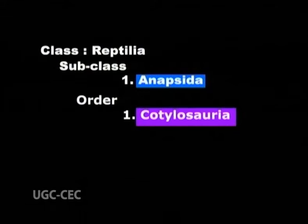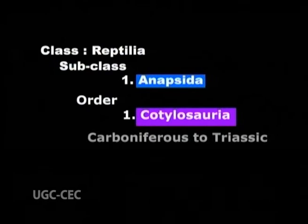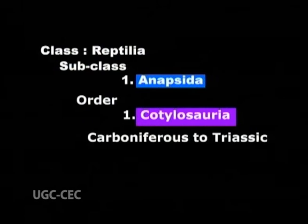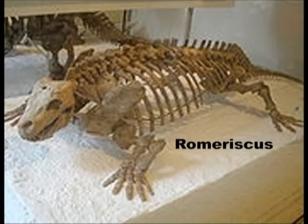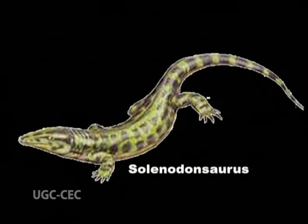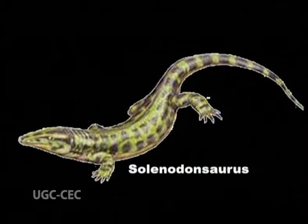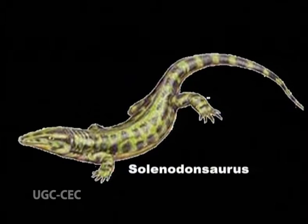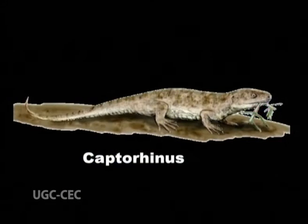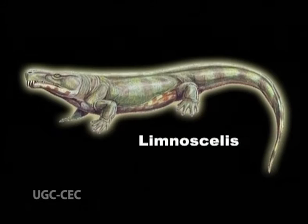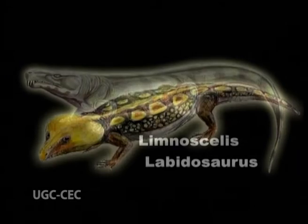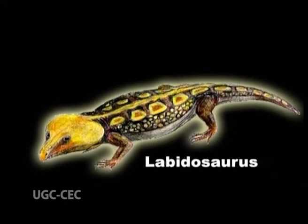Order 1, Cotylosauria, existed from Carboniferous to Triassic. Examples are Romeriscus, Solenodontosaurus, Capitoryncus, Limnosalis, Labidosaurus, and Meloreta.